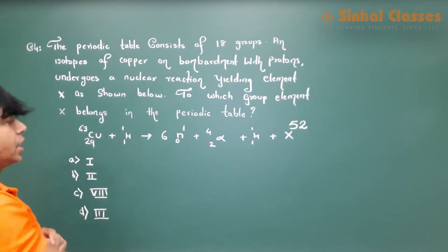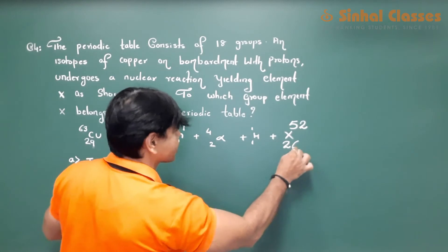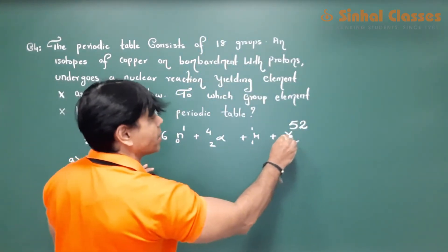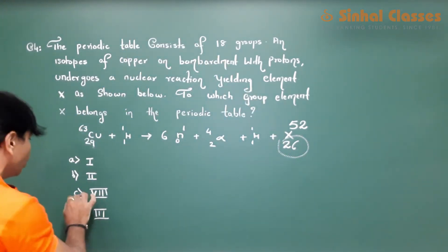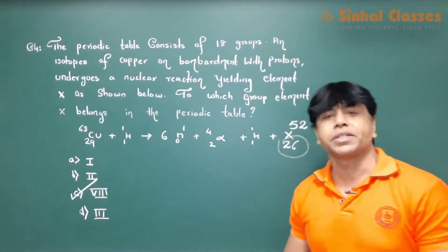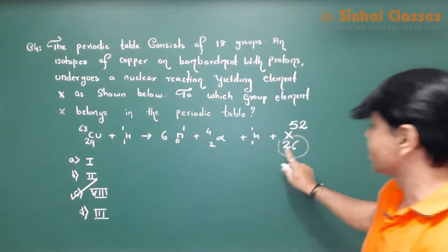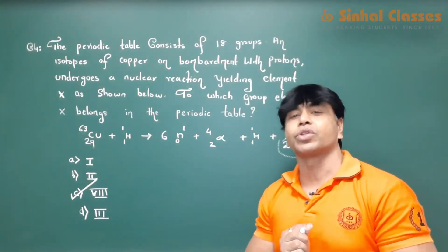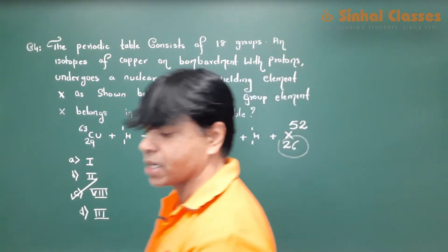Atomic number: 29 plus 1 equals 30, so this will go as 26. The atomic number coming out is 26. Therefore it should belong to group 8 of the periodic table. The answer for this question will be C, since atomic number 26 is for iron, which belongs to group 8.